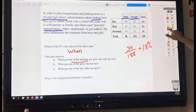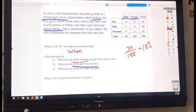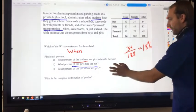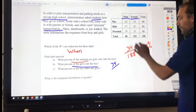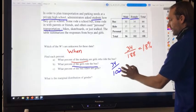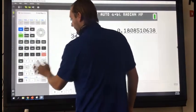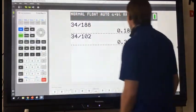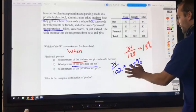18% of the students are girls who rode the bus. Next, what percent of girls ride the bus? What percent of girls ride the bus? So on top, still 34, right? And on the bottom, what total am I using? 102. What percentage of girls ride the bus? So 34 divided by 102, 33%. So a third of the girls.